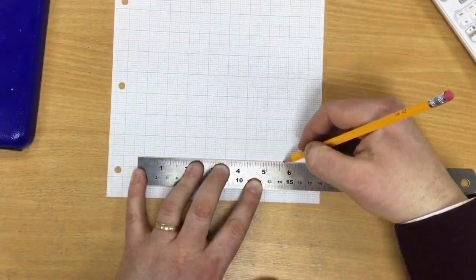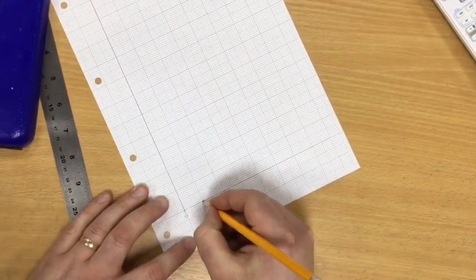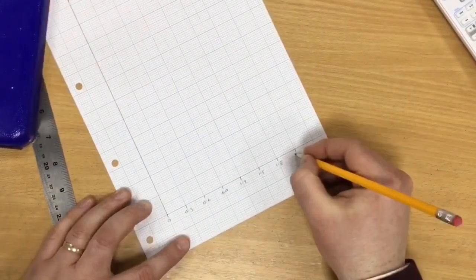We can draw a graph of our results to illustrate how pH changes with the addition of calcium hydroxide. When plotting a graph we must remember to use a pencil and a ruler.